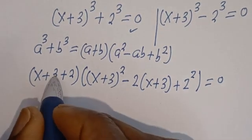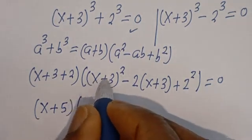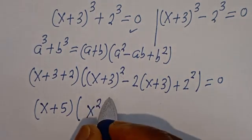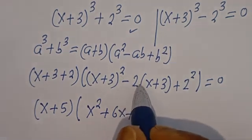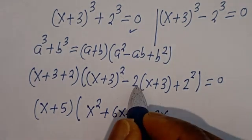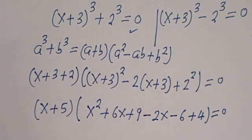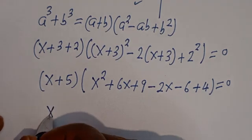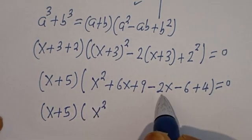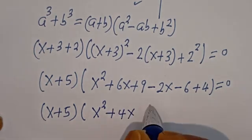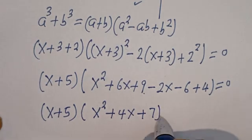Then x plus 3 plus 2, which is x plus 5, bracket, and expanding the second factor: x plus 3 squared minus 2 times x plus 3 plus 2 squared. Expanding gives x squared plus 6x plus 9 minus 2x minus 6 plus 4, which simplifies to x squared plus 4x plus 7, is equal to 0. So we have x plus 5, bracket, x squared plus 4x plus 7, equals 0.